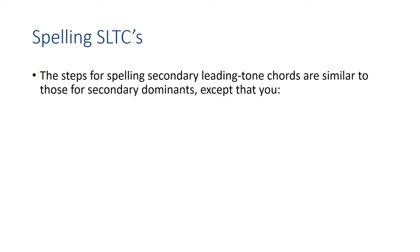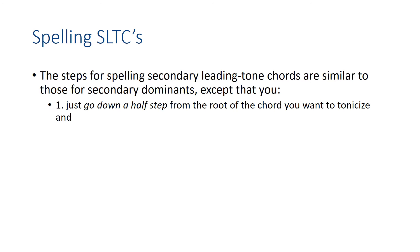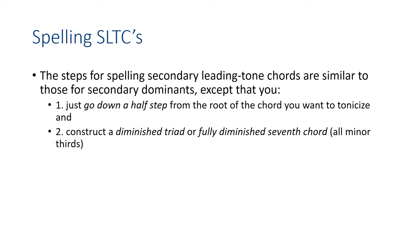Here are the steps for spelling a secondary leading tone chord. Instead of going up a perfect fifth from the root of the chord you want to tonicize, just go down a half step to the leading tone. You want to write a Ti-Do in some secondary key — that Ti is the root of the leading tone chord. Go down a half step, then write a diminished triad, fully diminished seventh chord, or half diminished seventh chord on that leading tone. Just go down a half step from the root of the chord you want to tonicize — that's the important part.